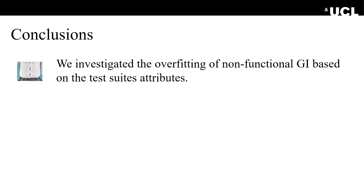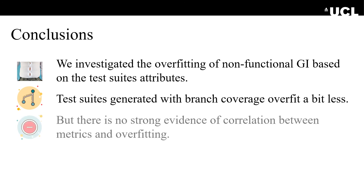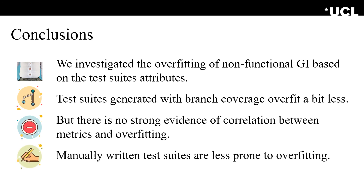In conclusion, we investigated the overfitting of non-functional GI based on test suite attributes. We found that test suites generated with branch coverage lead to patches that overfit a bit less, though the difference is small but statistically significant. There is no strong evidence of correlation between coverage metrics and overfitting, so those metrics cannot be used as reliable predictors. Finally, manually written test suites are less prone to overfitting, despite the fact that they cover less of the software. Thank you very much.